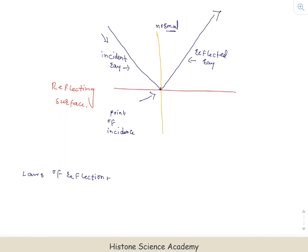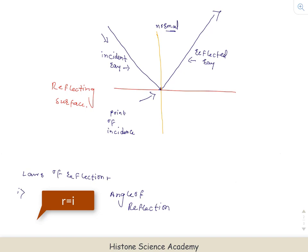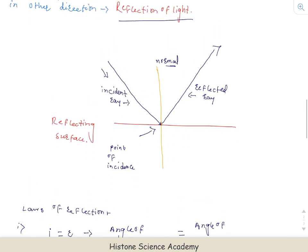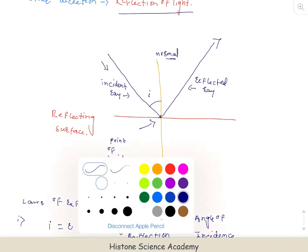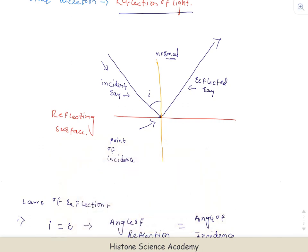यहाँ पर सबसे पहला law यह होता है कि angle of reflection, जिस angle से light reflect होता है, angle of reflection is equal to angle of incidence। Light किस angle से deflect होकर जाएगा, यह depend करता है कि light कौन से angle में आ रहा है। Now, the angle between the incident ray and the normal is referred to as angle of incidence.